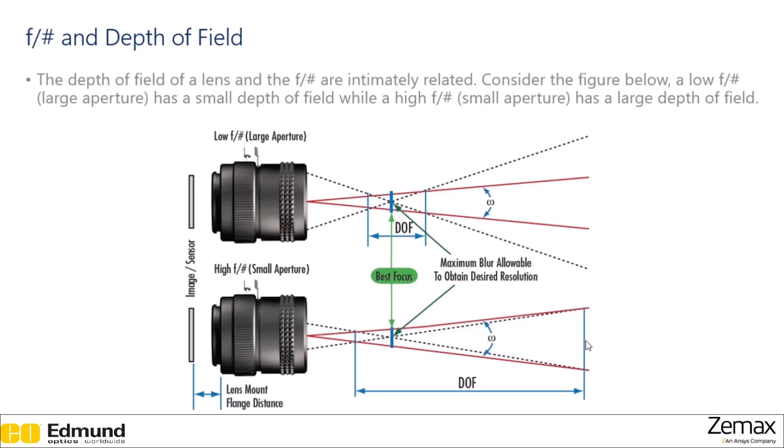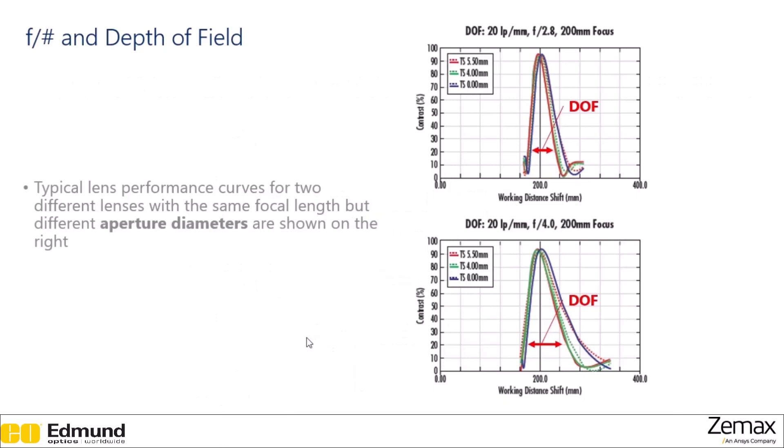These are sometimes called slow and fast imaging systems, because a large aperture lets a lot of light in. So a shorter exposure time gets the same amount of photons into your system. Whereas a smaller aperture lets less light in and takes a longer exposure time. Again, we can look at these performance curves for different lenses that have identical parameters, but different F numbers.